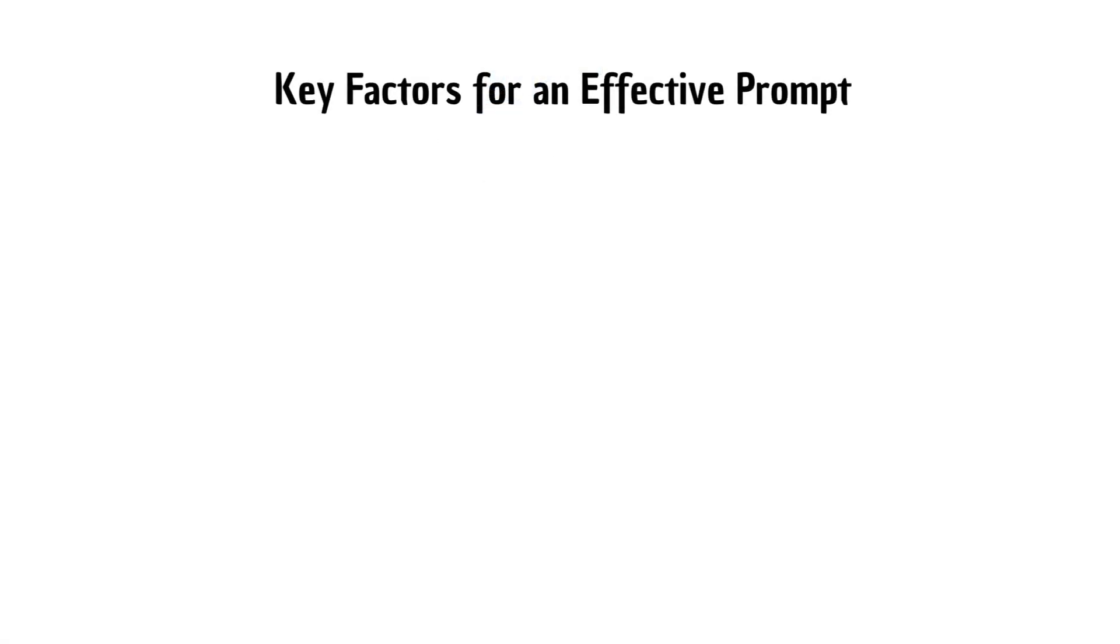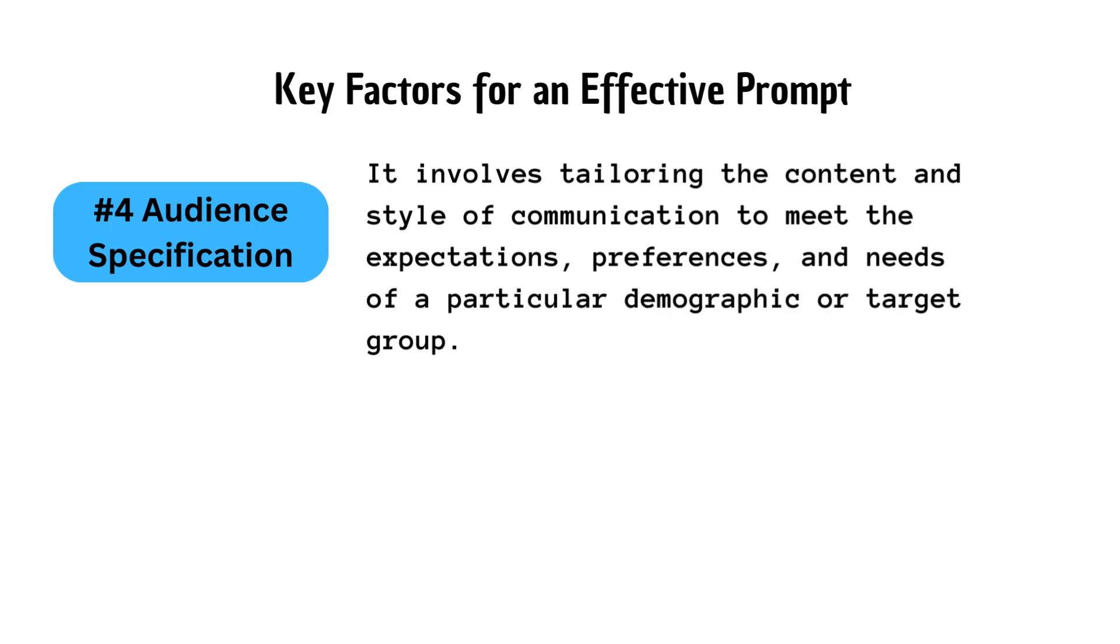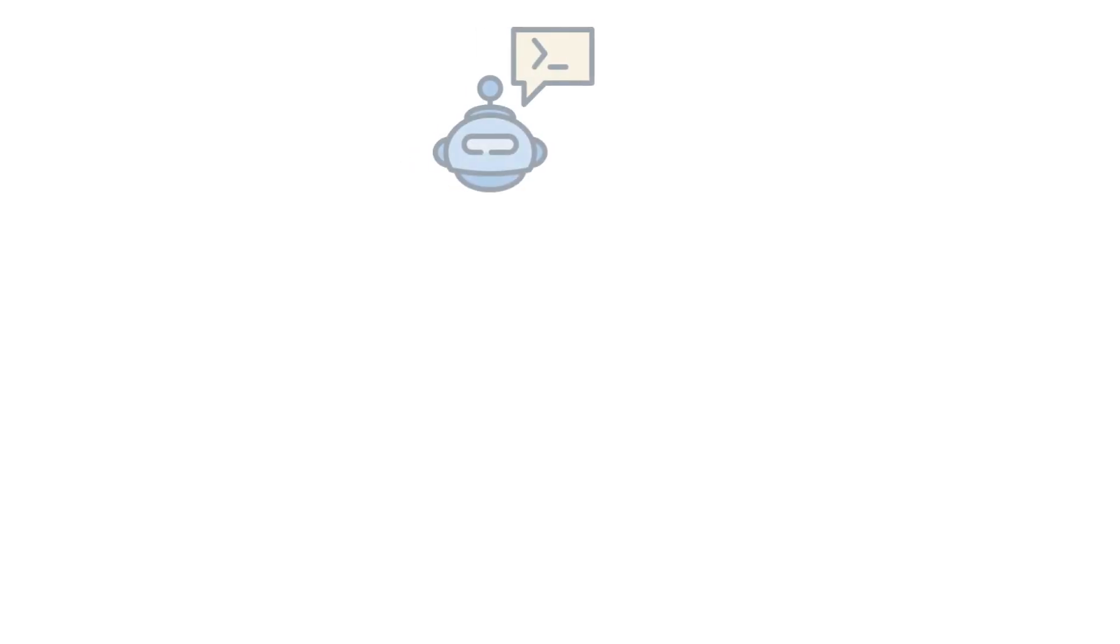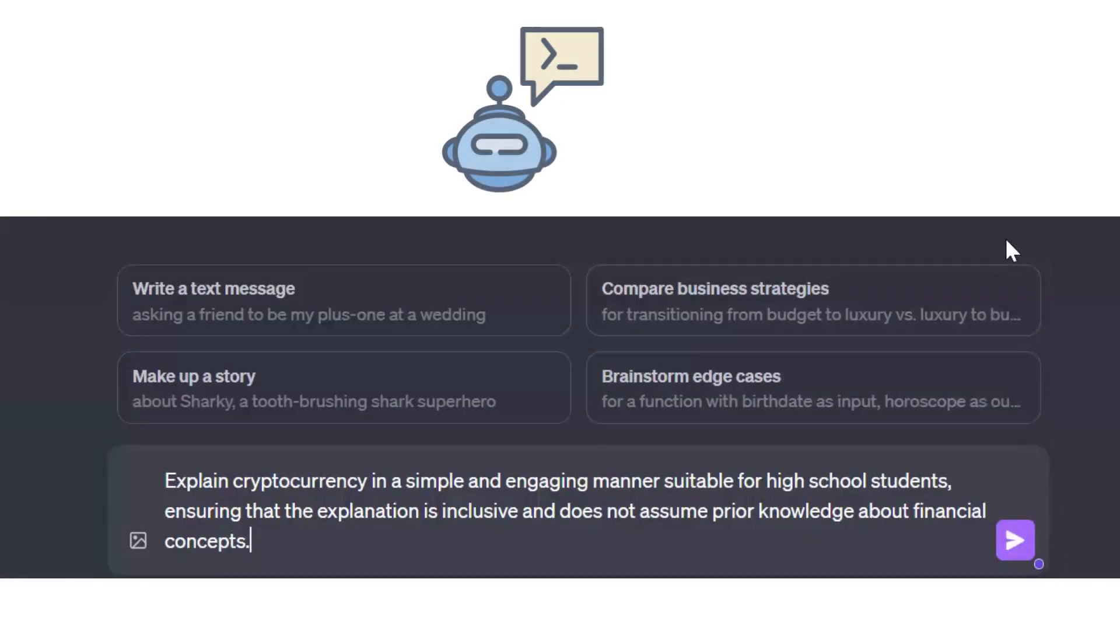Key factors for an effective prompt, number four is audience specification. It involves tailoring the content and style of communication to meet the expectations, preferences, and needs of a particular demographic or target group. For example, a basic prompt: Explain cryptocurrency. The refined prompt: Explain cryptocurrency in a simple and engaging manner suitable for high school students, ensuring that the explanation is inclusive and does not assume prior knowledge about concepts.